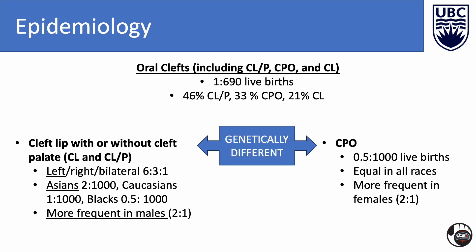Let's explore the demographic patterns associated with these conditions. It is very important to understand that cleft lip with or without cleft palate and isolated cleft palate are genetically and epidemiologically very distinct. Oral clefts in general, including isolated cleft palate, cleft lip, and cleft lip and palate, occur in roughly 1 in 690 live births, and the majority of these are cleft lip and palate. For cleft lip and palate specifically, most occur on the left side of the face and are highest in Asians and in males. In isolated cleft palate, there is no difference in racial distribution and it is more frequent in females.